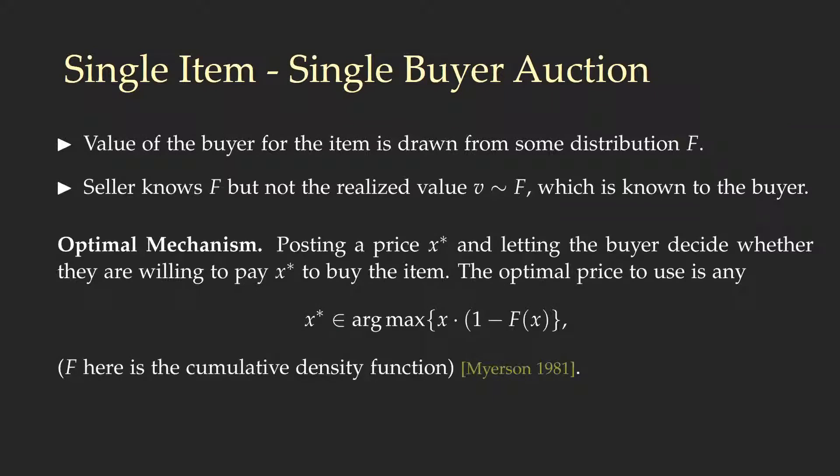A celebrated result by Myerson states that the optimal mechanism in this setting is a posted-price mechanism, where the seller posts a price x-star and lets the buyer decide whether they are willing to pay x-star to get the item or not. The optimal price x-star can be easily computed by maximizing the product x times (1 minus F(x)), where F here denotes the cumulative distribution function.